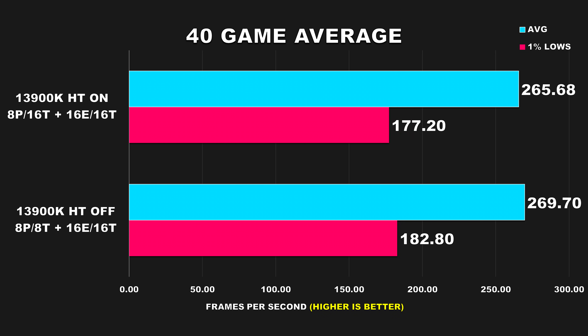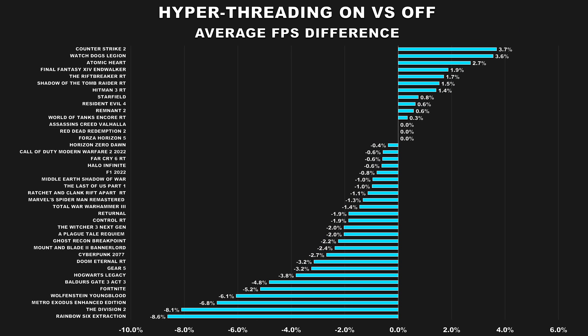Moving on to our 40-game average, disabling hyper-threading improves average FPS by around 2%, which is barely anything, and 1% lows improved by around 3%. So overall, disabling hyper-threading did improve performance, but it wasn't anything major. The differences in the vast majority of games were negligible. Looking at the 40 games tested, many showed a margin of less than 5% for average FPS — at that point you can call it basically a tie or even consider it margin of error, as you will not notice the difference at all.